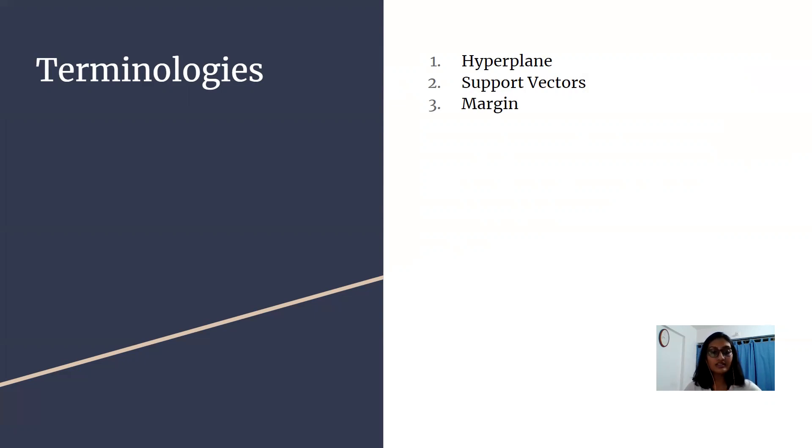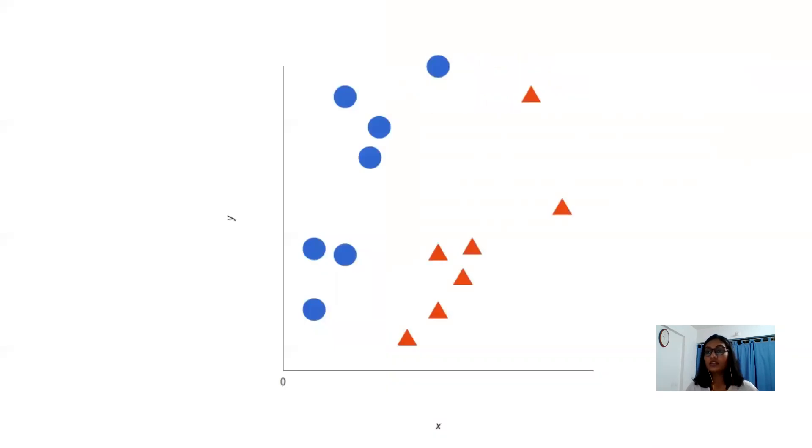Now let us take an example and understand these terminologies. Imagine you have two tags red and blue and our data have two features x and y. We want to classify that given a pair of x y coordinates, output if it's either red or blue. We plot our already labeled training data on the plane. A support vector machine takes these data points and outputs the hyperplane which in two dimensions is simply a line that best separates the tags. Now let us see it here.